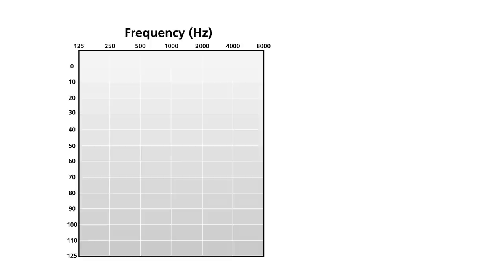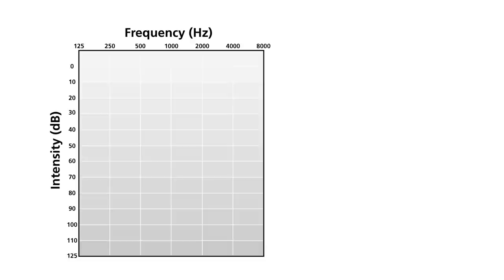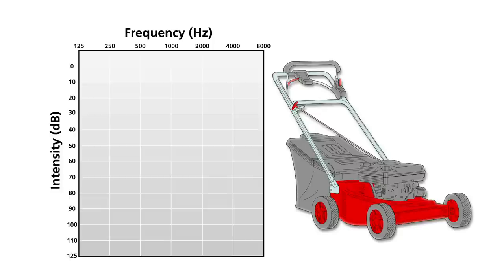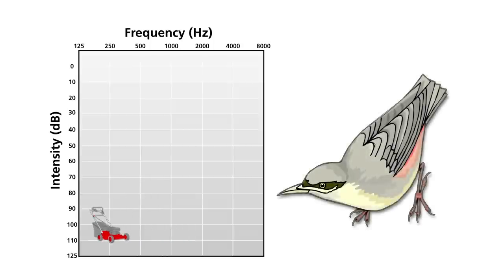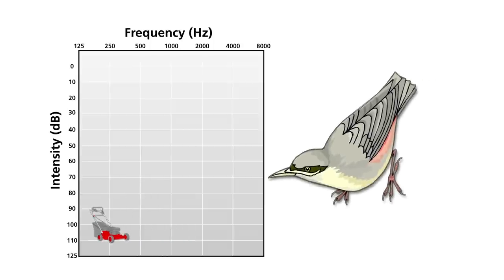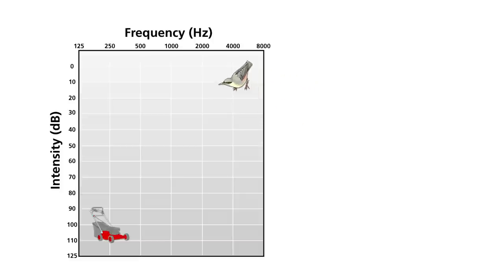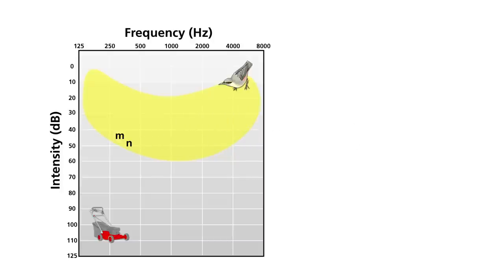The audiogram is a graphical representation of hearing ability. Frequency, or pitch, is located along the top of the graph from low to high. Intensity, or loudness, is located along the side of the graph from low (quiet) to high (loud). A lawnmower is a low-frequency sound but it is very loud; on the audiogram it would appear here. A bird whistle has a high-frequency sound but it is very quiet; it would appear on the audiogram here. The sounds of speech vary from low to high pitch and from soft to moderate loudness, and they fall within a speech envelope. Low-pitched sounds like 'mmm' and 'nn' would be in one part of the envelope, and high-pitched sounds like 'shh' and 'ss' in another.